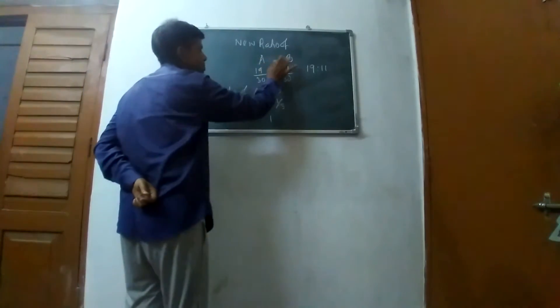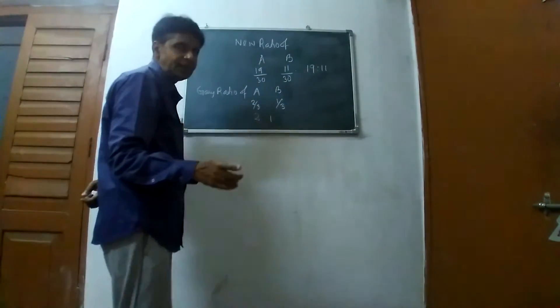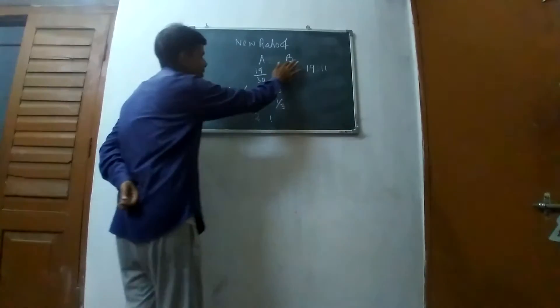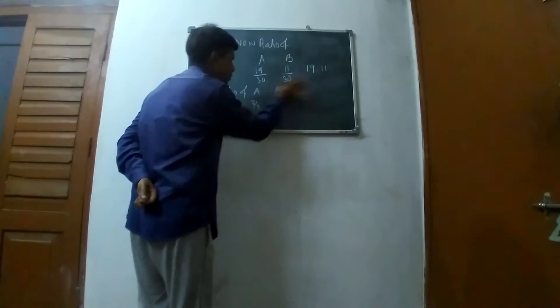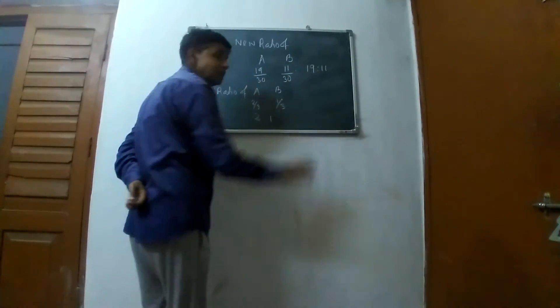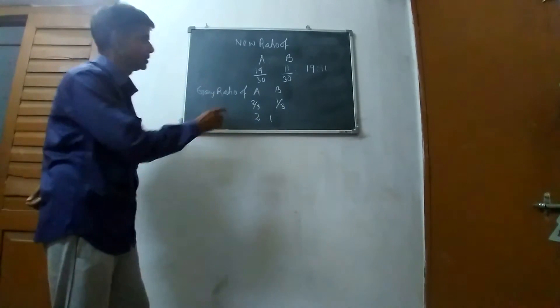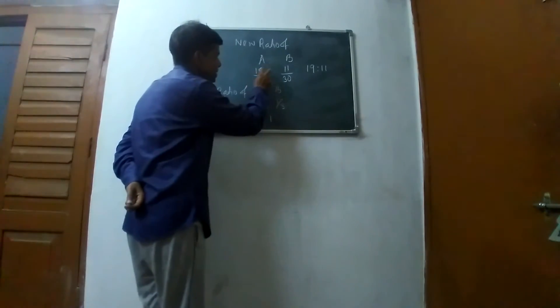According to the calculation, A's share is 19/30 and B's share is 11/30. Since 30 is common, it becomes 19:11. The new ratio is 19:11.